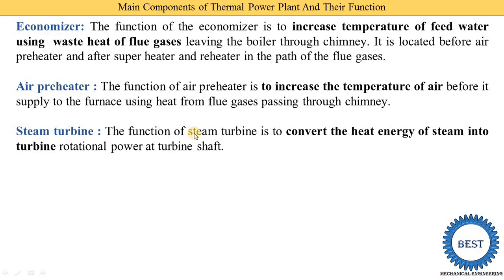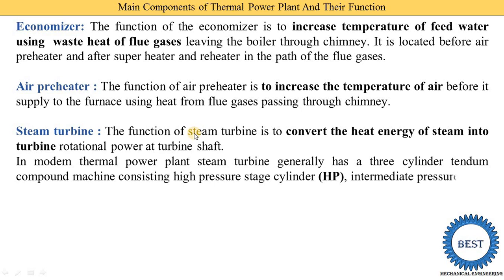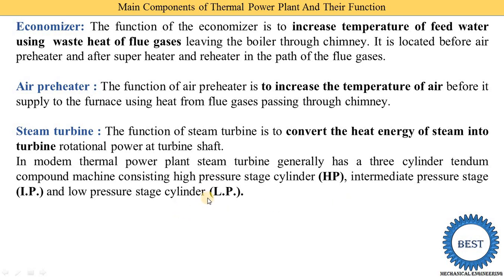In a turbine, heat energy is converted into mechanical rotational energy. In a modern thermal power plant, the steam turbine generally has a three-cylinder tandem compound machine consisting of a high-pressure (HP) stage cylinder, an intermediate-pressure (IP) stage, and a low-pressure (LP) stage.